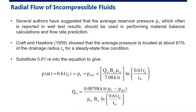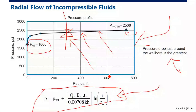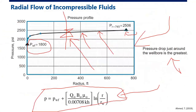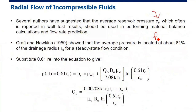Several authors have suggested that average reservoir pressure — often reported in well test results — should be used in material balance calculations and predictions. We need to use average reservoir pressure pr, not the external pressure pe. Previously we used pe, but for material balance and flow rate prediction we use pr, and they are not the same.